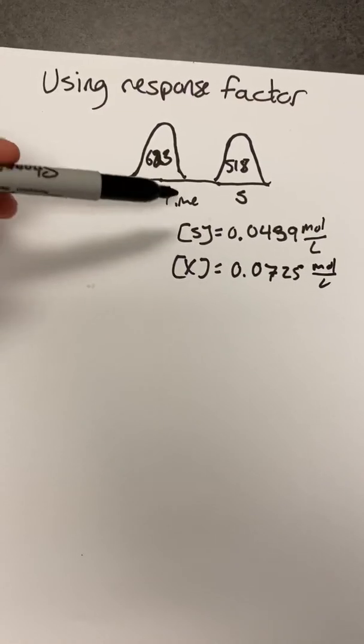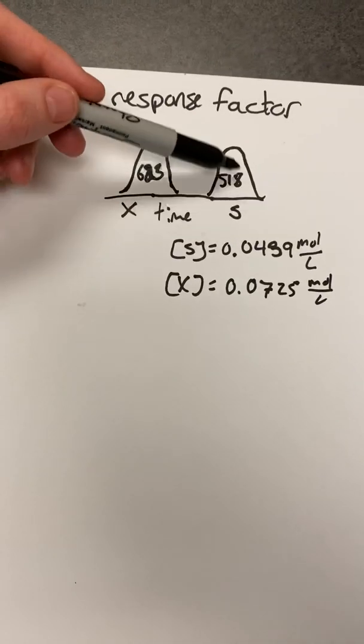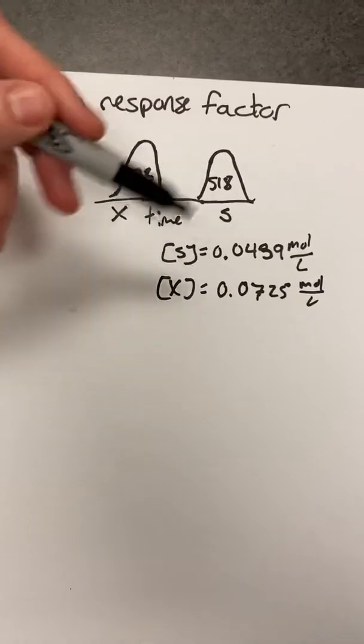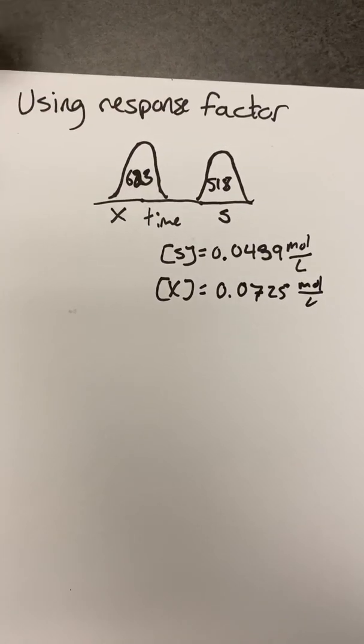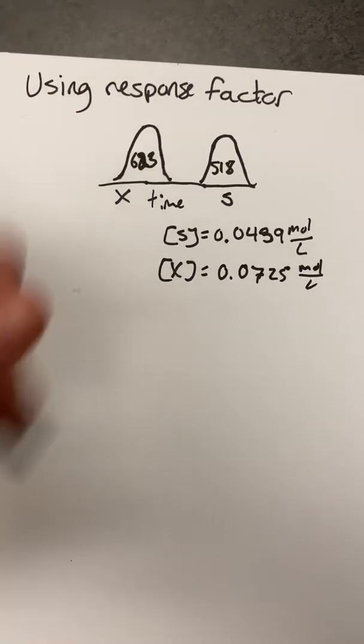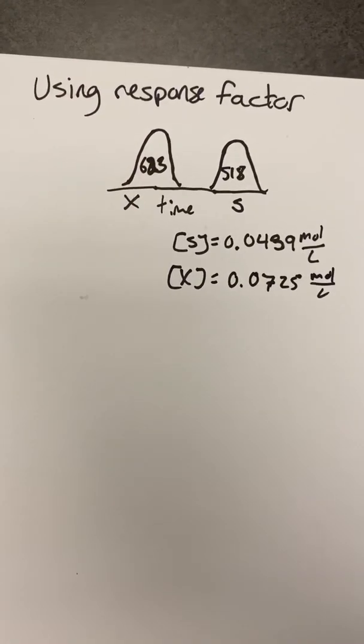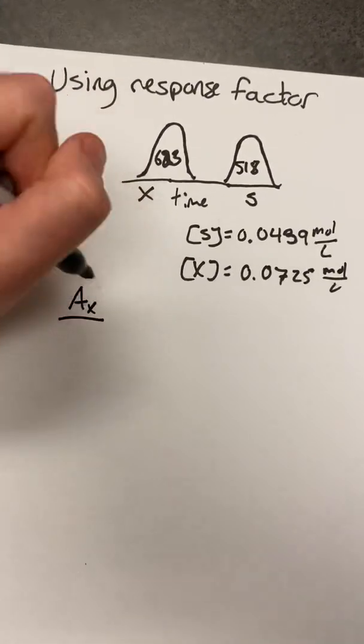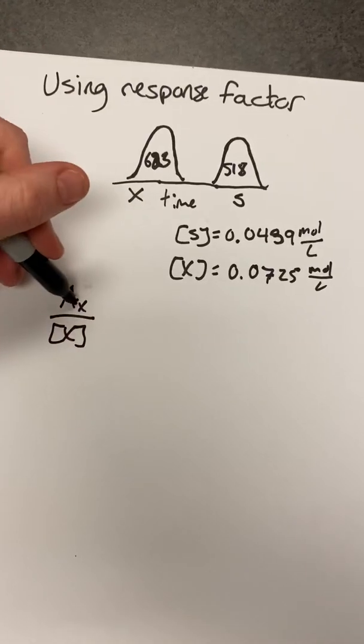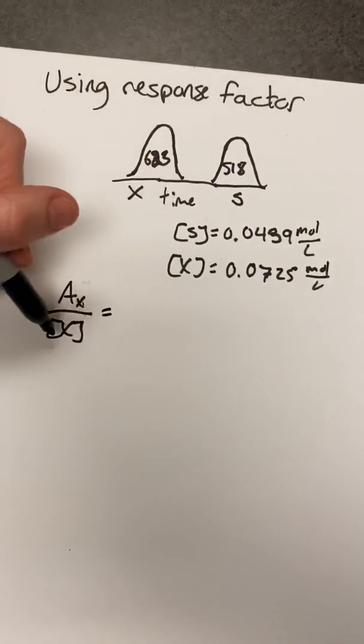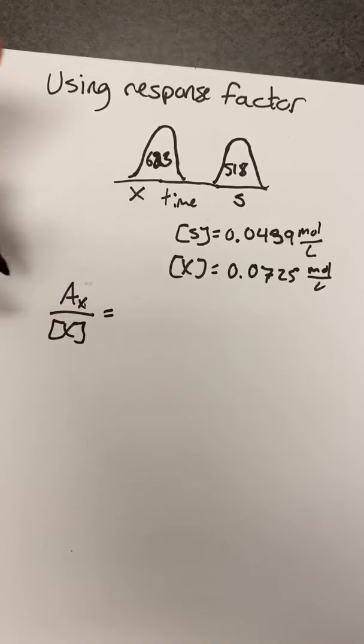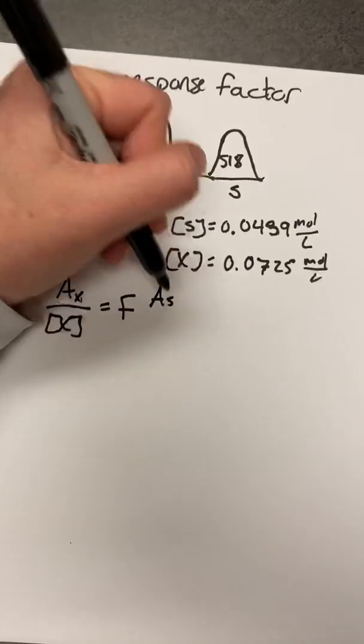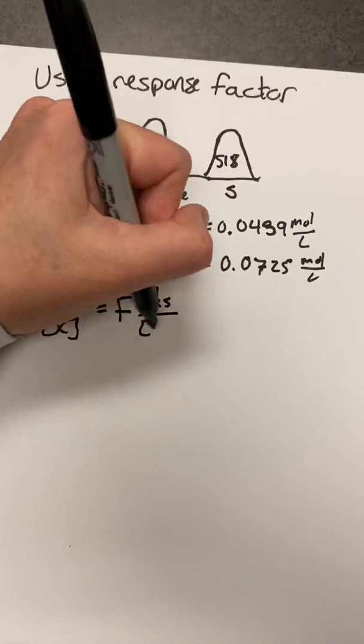Well, we'd have to find a way to relate the concentration and the area together. And when you have two known amounts and two known areas, you can actually figure out how the specific instrument is responding. And we'd determine that using the response factor formula, which is this. So the area of one thing over the concentration of it, it being the analyte that you're interested in, is equal to the response factor times the area of the standard over the concentration of the standard.